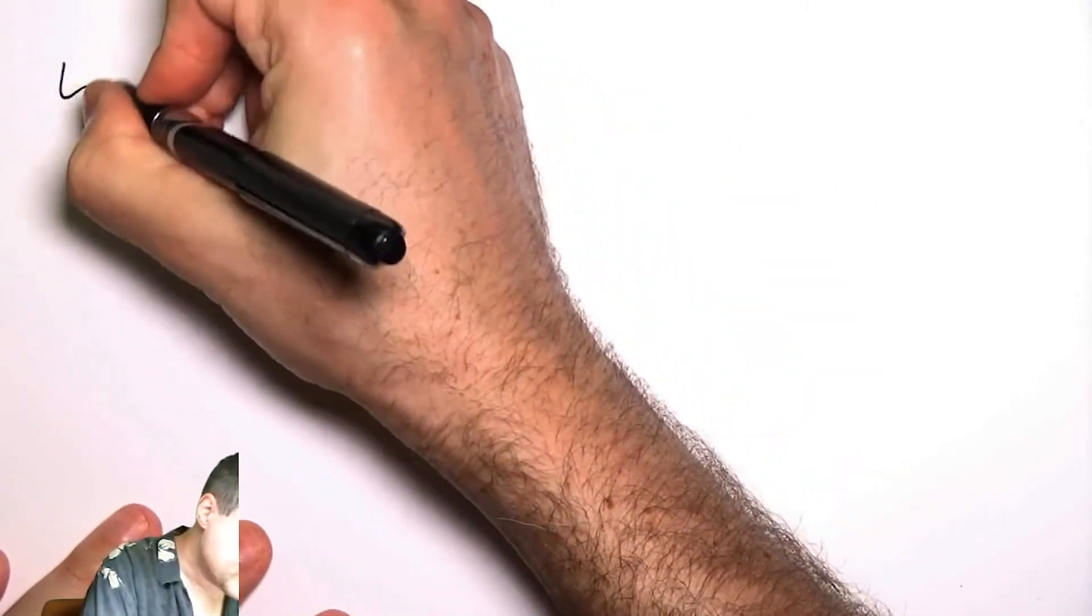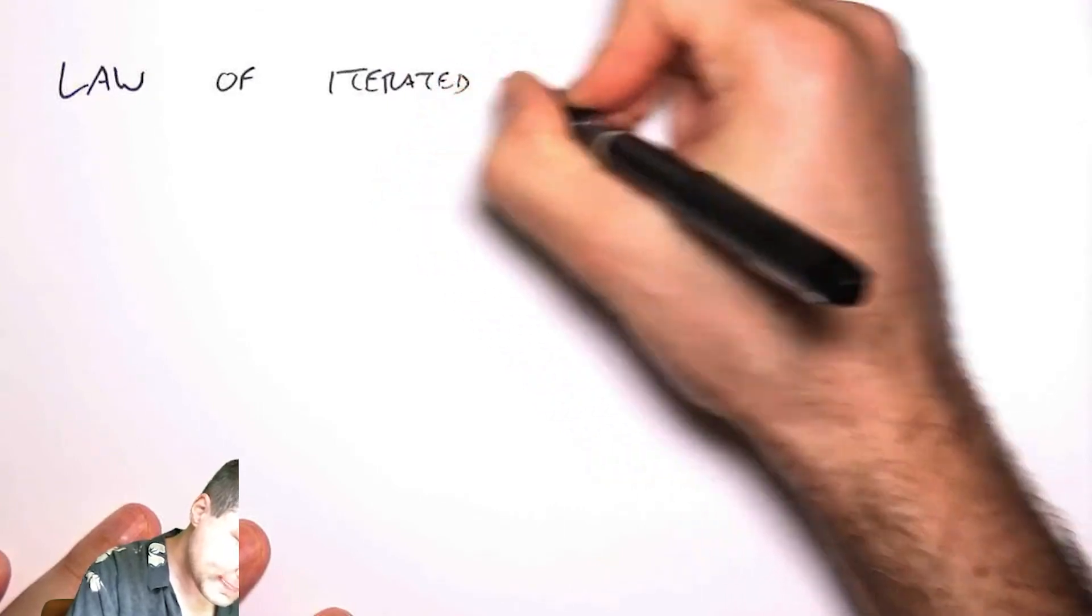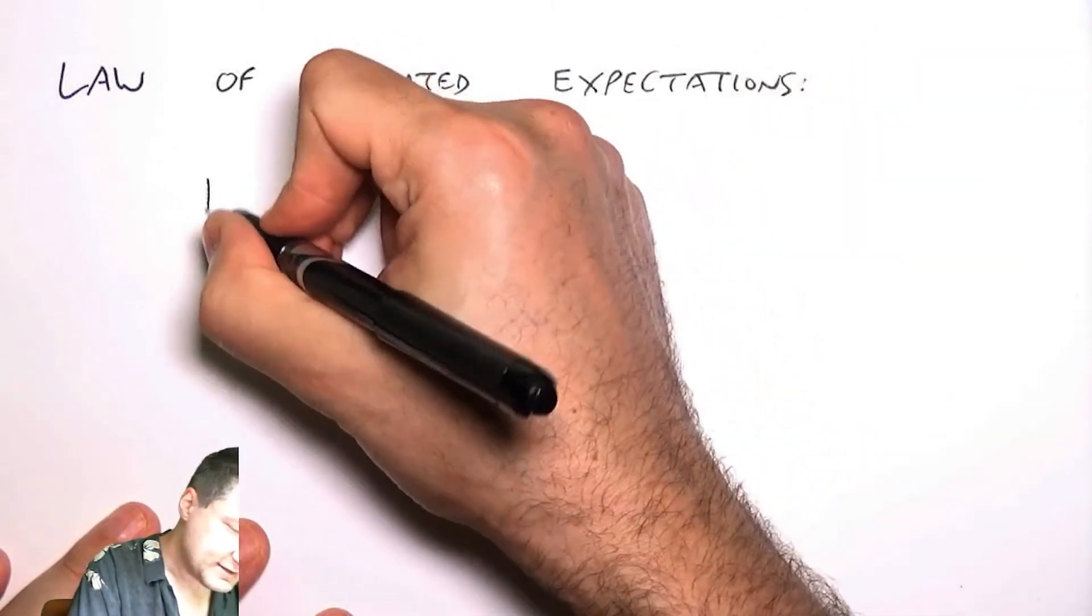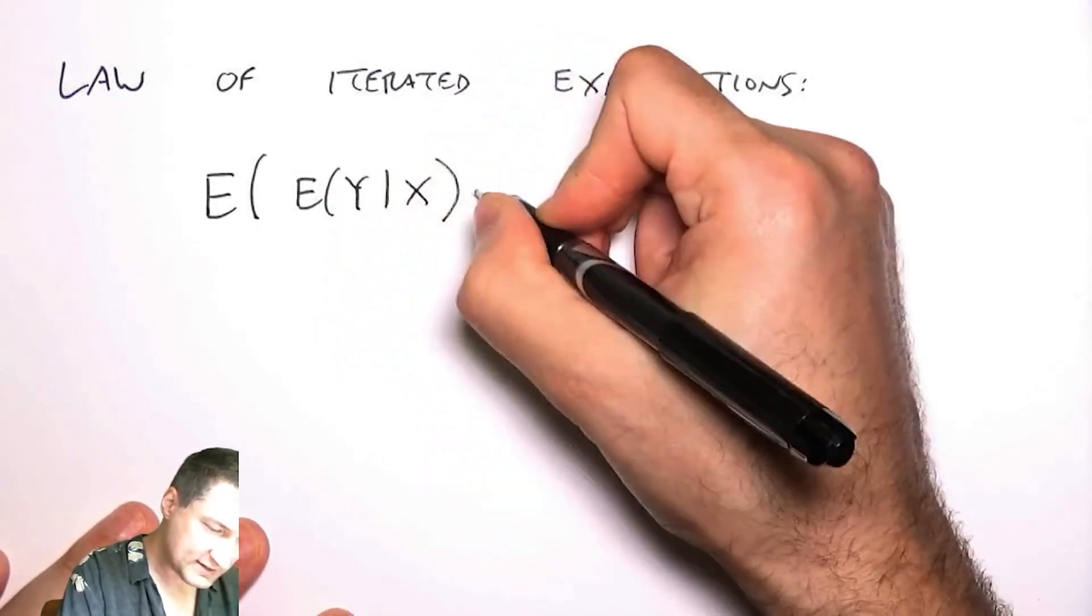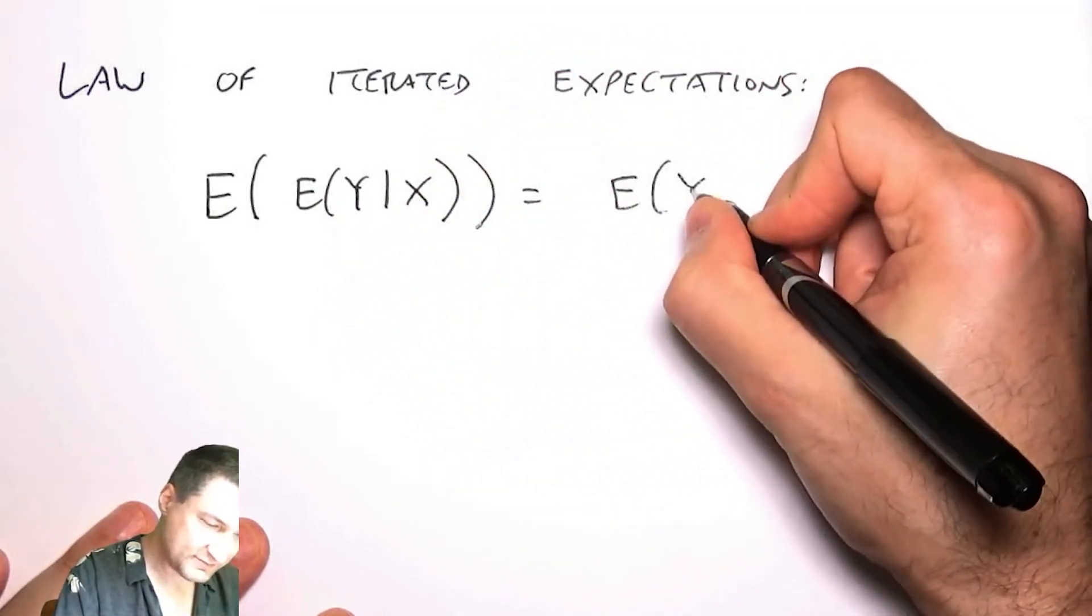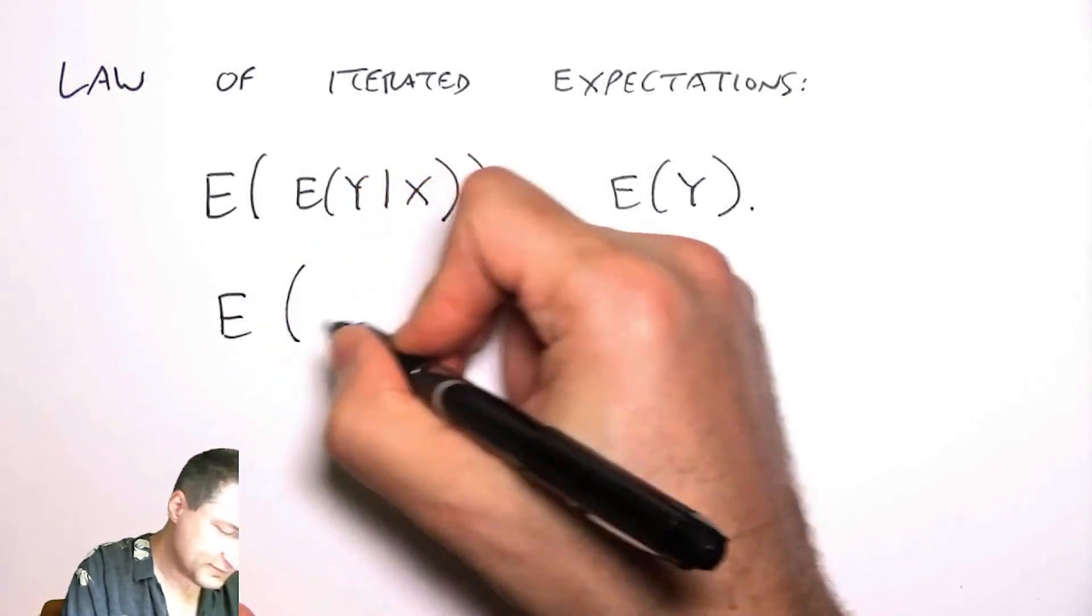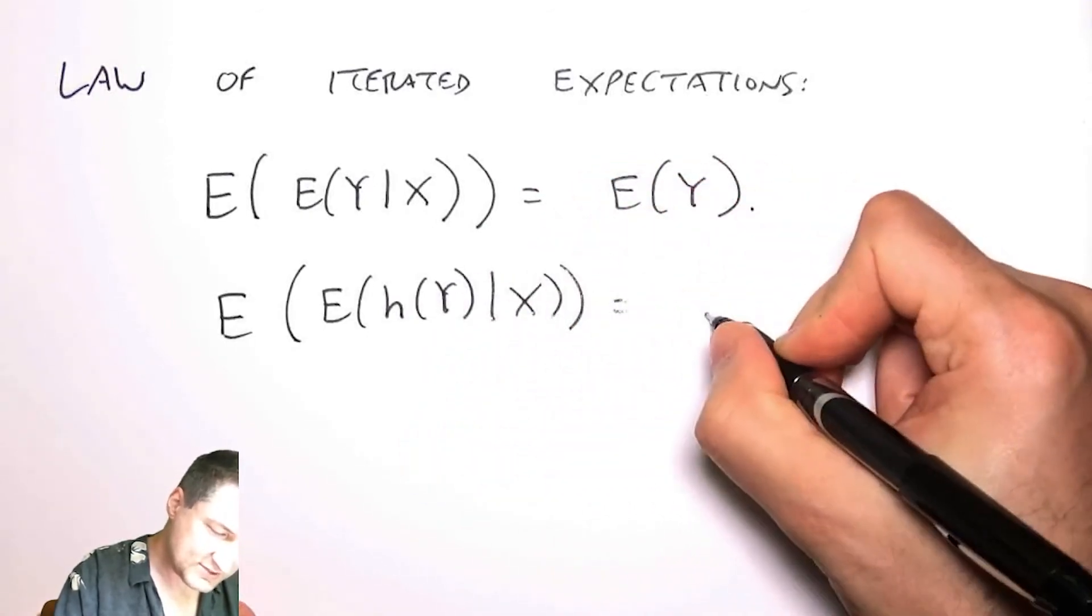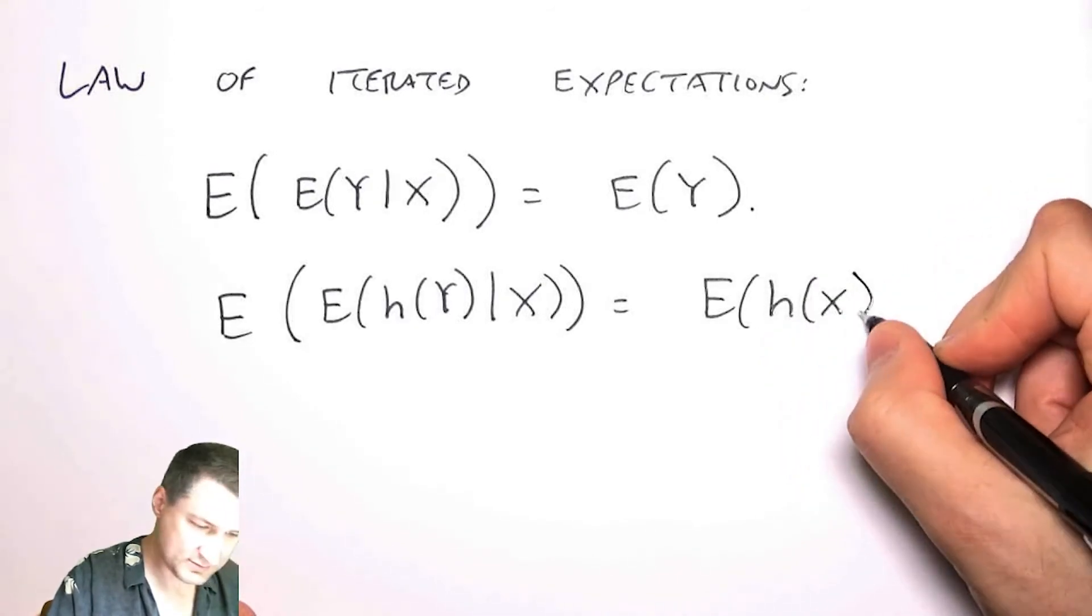Which is that we have discovered what's called the law of iterated expectations. That is, that the expected value of the expected value of y given x is actually the same as the expected value of y. Or to put it a different way, the expected value of the expected value of any function of y given x is just the expected value of h of y.